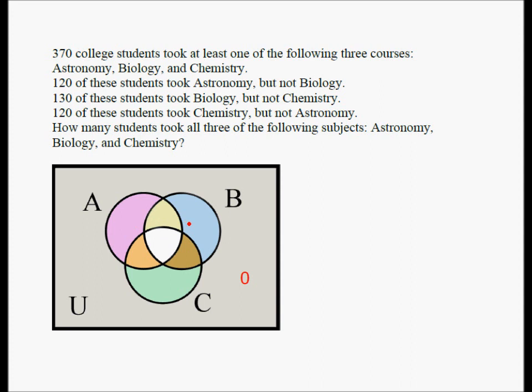Now we need to fill out some of the other areas. So let's see what we can do with the first statement. 120 of these students took astronomy but not biology. That tells me that these two areas should add up to 120, and I'm going to write 120 here.